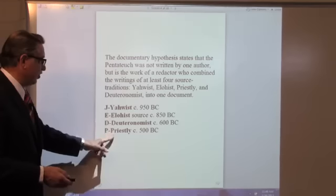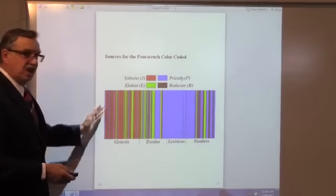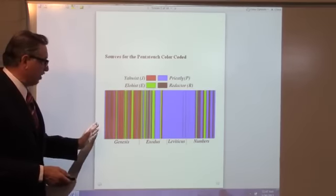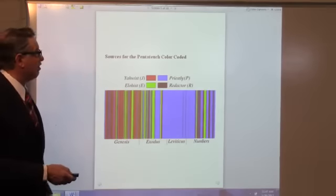These are the supposed dates of authorship. If all of this is color-coded according to the authors, it looks like a giant UPC code in Genesis, Exodus, Leviticus, and Numbers.